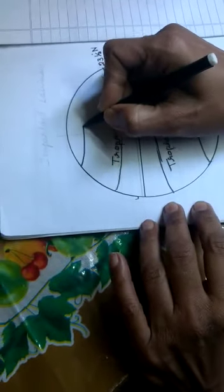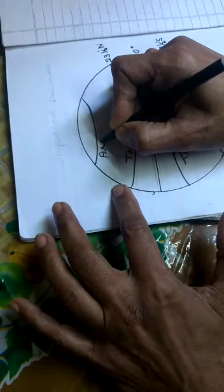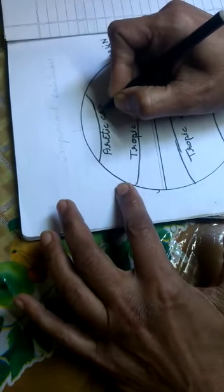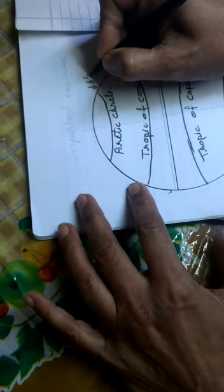This is Arctic Circle. It is 66 and half degree north.